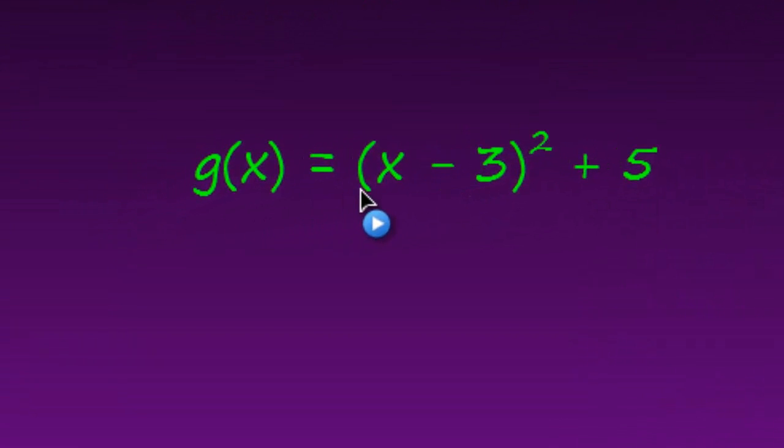So g of x is now x minus 3 squared plus 5. So what's happened to this original function in order to produce this function? And remember again, inside here is a horizontal shift. So because this is a negative 3, the shift is the opposite way of that. So that's in the positive direction. So this is going to be a shift right 3 units.